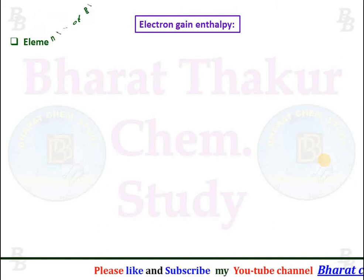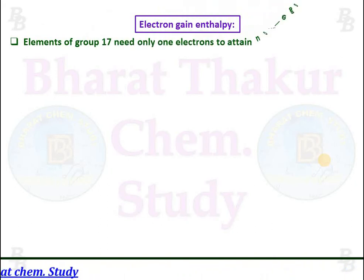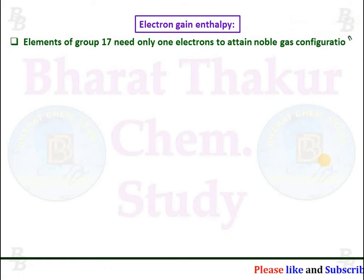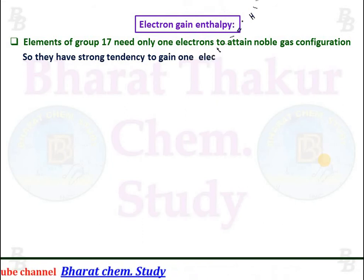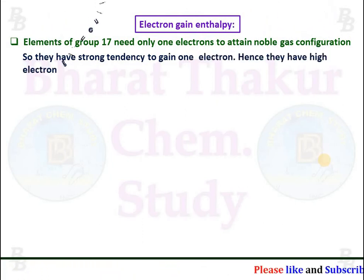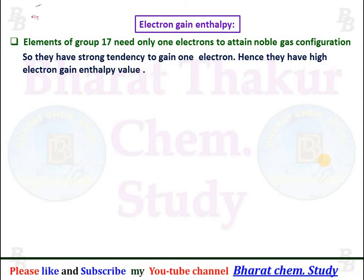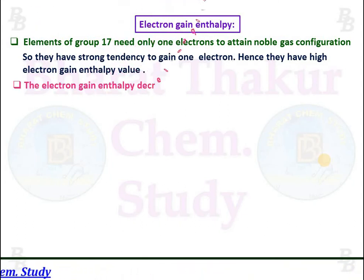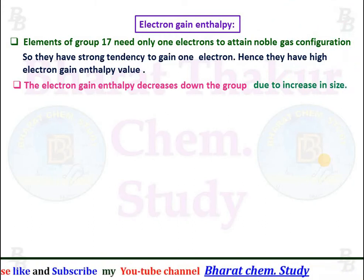Electron gain enthalpy: elements of group 17 need only one electron to attain noble gas configuration, so they have a high tendency to gain one electron. Therefore they have high electron gain enthalpy values. The electron gain enthalpy decreases down the group due to increase in size.